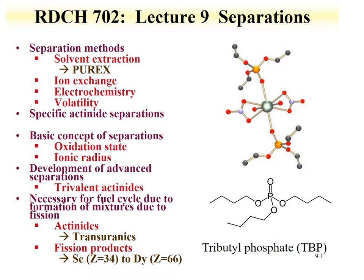Welcome to the ninth lecture for Radiochemistry 702. This lecture is on separations. The entire lecture will cover separation methods, including solvent extraction — with an example of the Purex process — as well as ion exchange, electrochemistry-based separations, and volatility separations. At the end we will discuss specific actinide separations. This first lecture will focus on solvent extraction with an example of the Purex process.